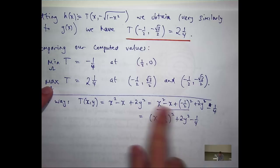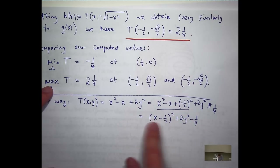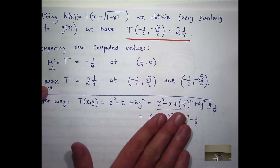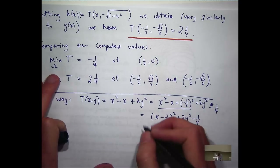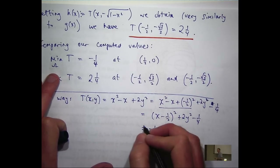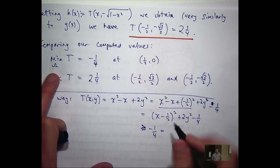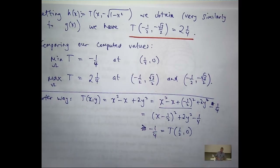This term (x minus one half) squared is always greater than or equal to zero. This term 2y squared is always greater than or equal to zero. When are these two terms equal to zero? When x equals one half and when y equals zero — then the first two terms are zero. So you can see that the minimum temperature is going to be minus one quarter. The temperature is always greater than or equal to minus one quarter, which is just its value when x equals one half and y equals zero. So actually, we don't need the second derivative test. We don't even need to compute a derivative.